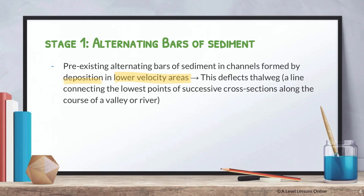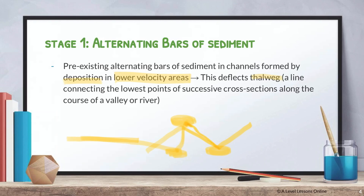When there are alternating bars of sediment, they essentially deflect the thalweg. The thalweg is a line connecting the lowest points of successive cross-sections along the course of a valley or river. Think of it as a line of velocity passing through the low points of the cross-section. As it passes through, it hits a bar of sediment and deflects, then hits another bar and deflects again — it keeps deflecting. That is what the thalweg does.